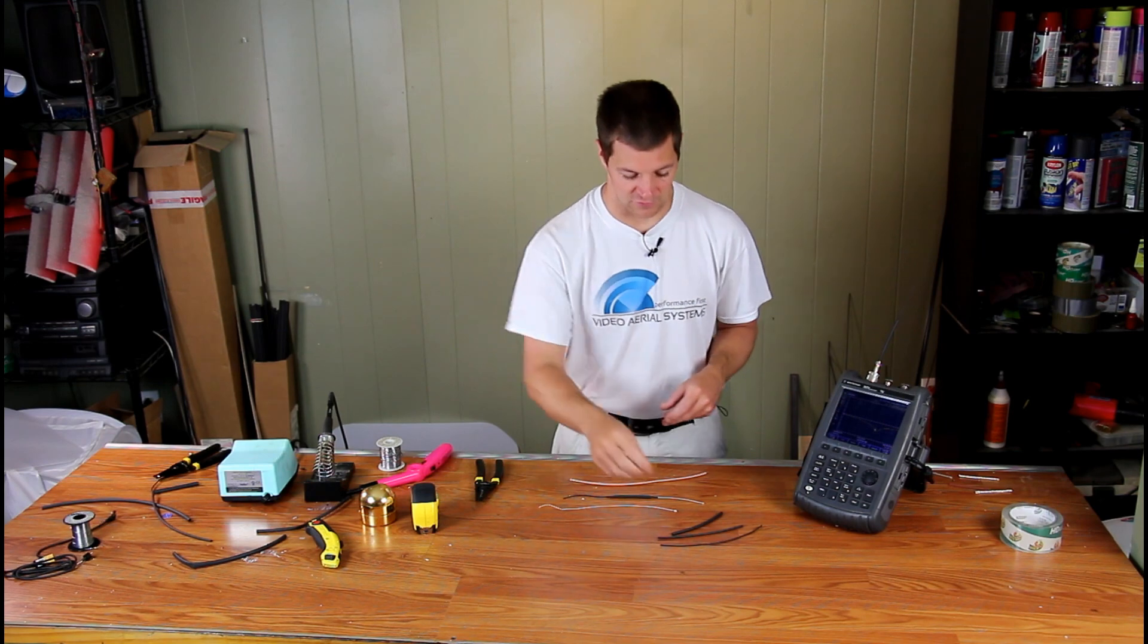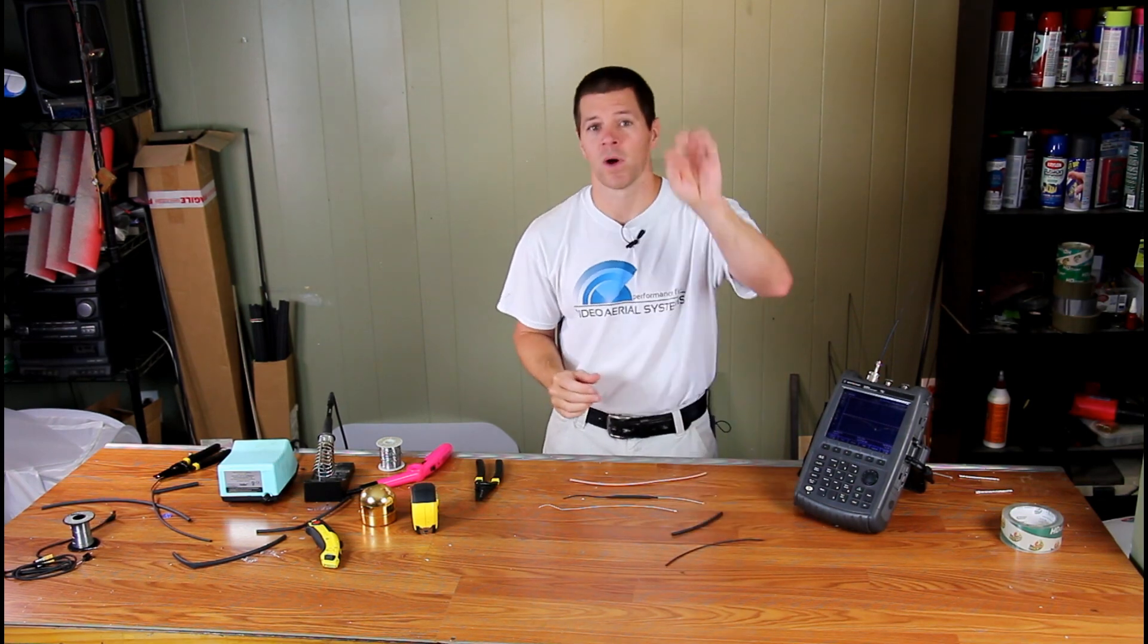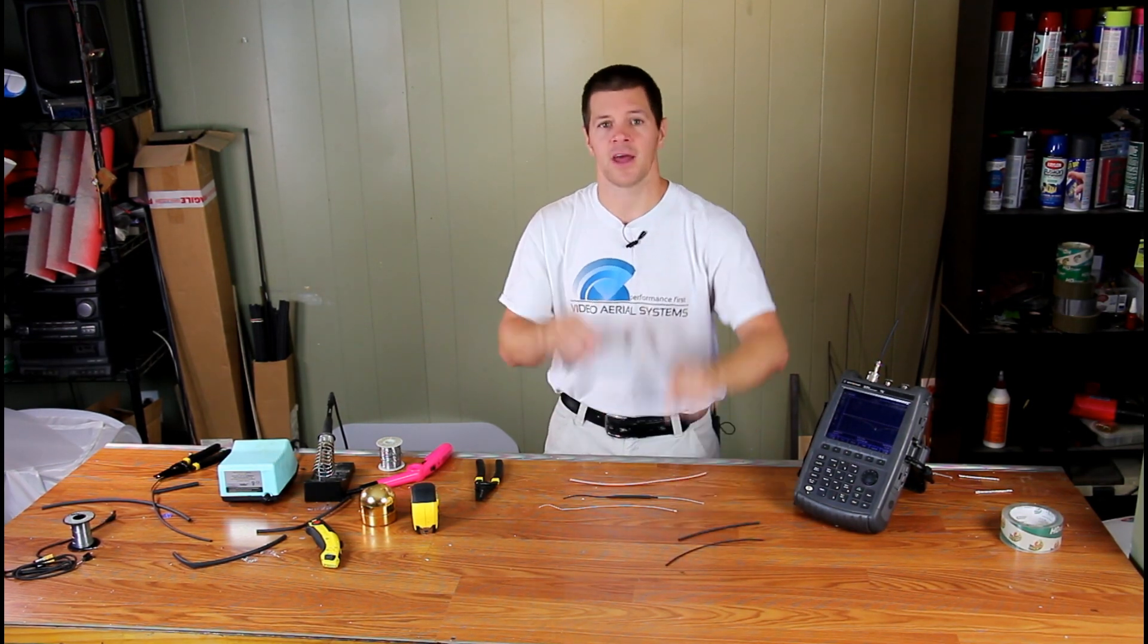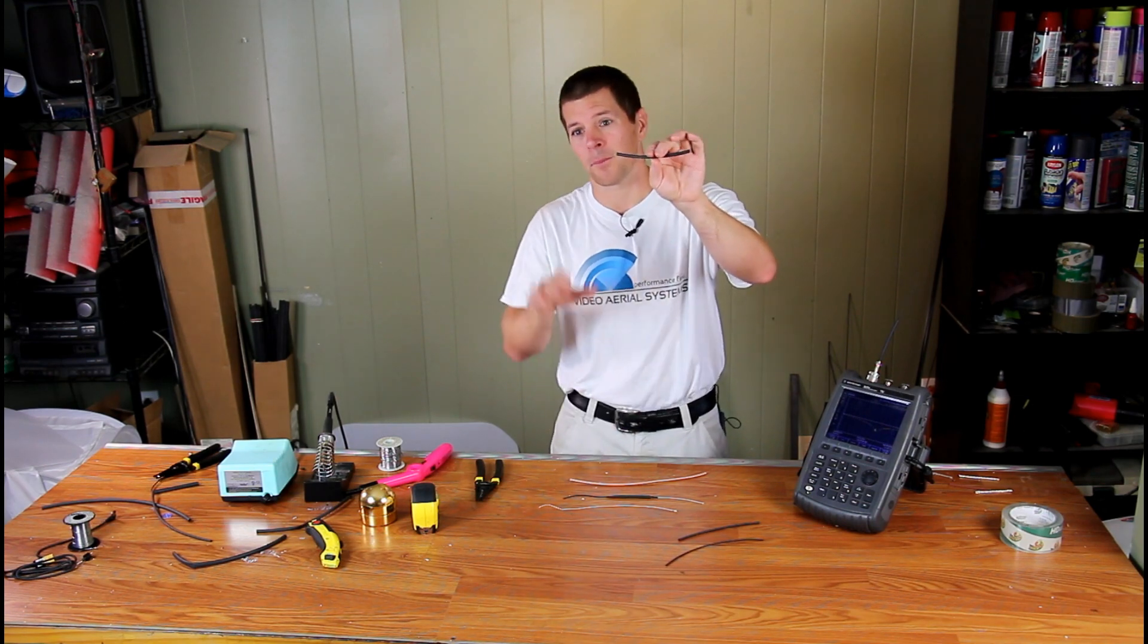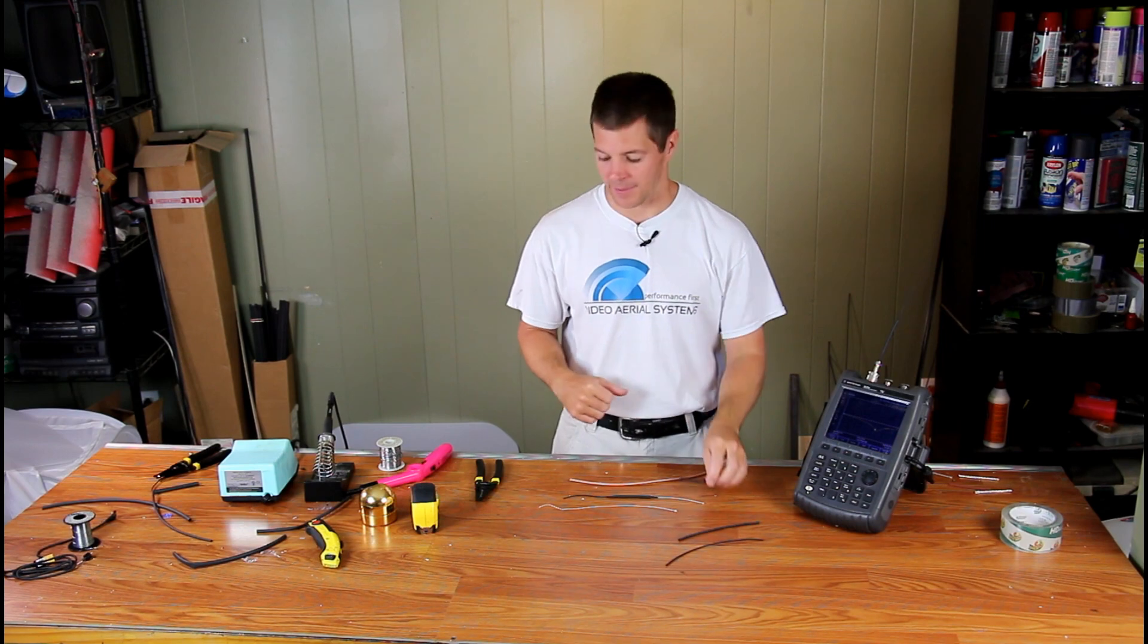You're going to need heat shrink tubing: 1/16 inch or 1.5 millimeter for your metric guys, 1/8 inch or approximately 3.5 millimeters, and 3/16 or approximately 6 to 7 millimeters should work about right.